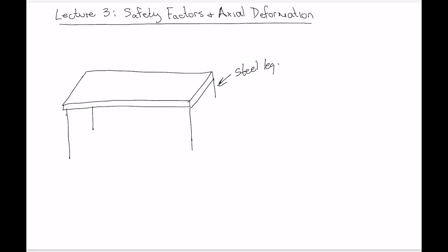The question is: how do we define what load those legs should be able to take? A table like this is used for writing, so it really doesn't have to hold much weight. But at some point somebody is going to stand on it, maybe a couple more people, and maybe they're jumping up and down — that's even more load. So what load do we actually design the legs to withstand?